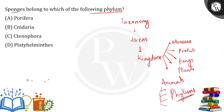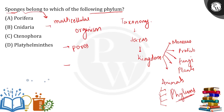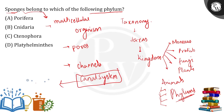We have to identify which phylum the sponge belongs to. Sponge is actually a multicellular organism. It has pores, and it also has certain channels which allow water to circulate through them. This means they have a canal system, and this canal system is a characteristic feature of one particular phylum.